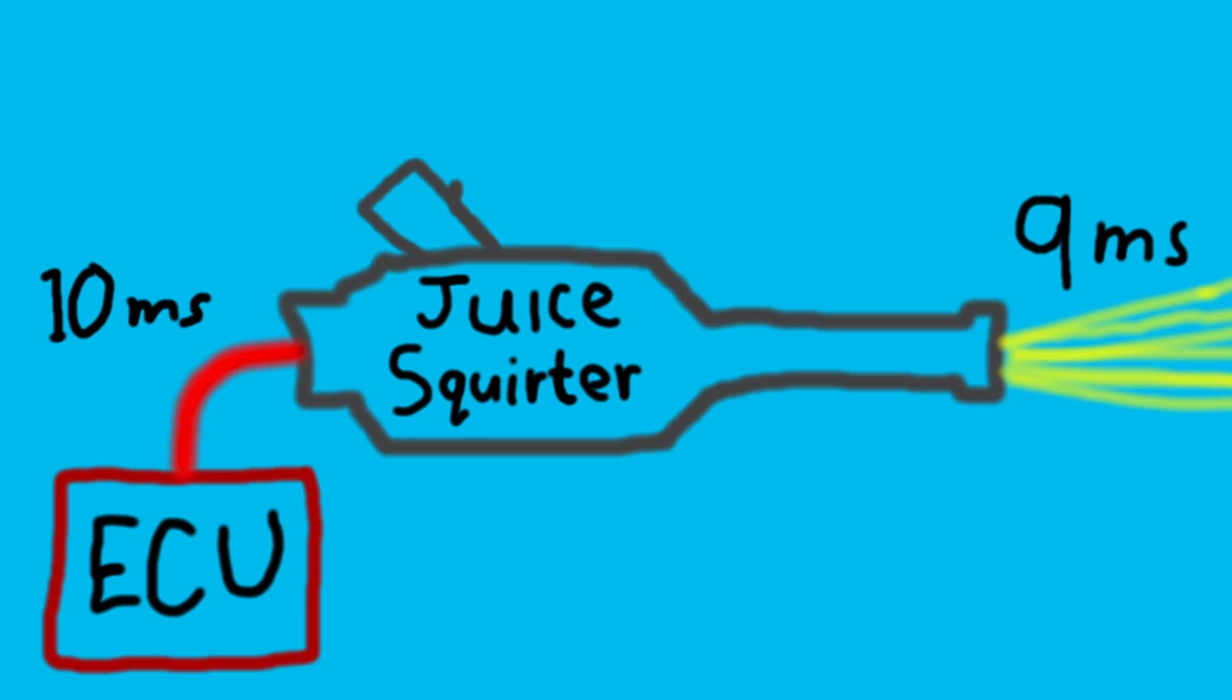In this case, the dead time would be 1 millisecond. If we give the computer accurate information about dead time, the computer has the ability to compensate for that by adjusting the pulse width.